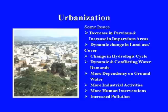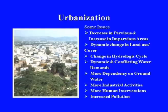So let us look at the issues which are involved with the growth in urbanization. First of all, there is a decrease in the pervious area and increase in the impervious area, which means that the natural ground is converted for human activity and thereby the ground characteristics change. This leads to a dynamic change in the land use and land cover — natural grasslands, vegetation or agricultural areas are converted for manmade use.